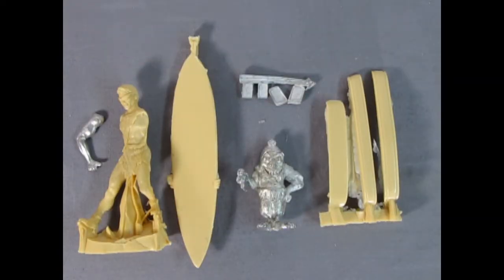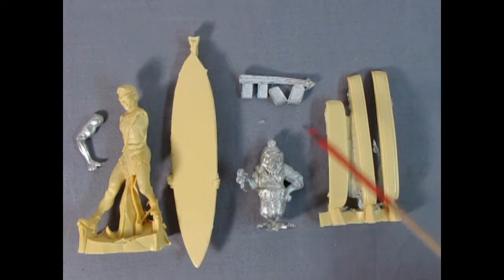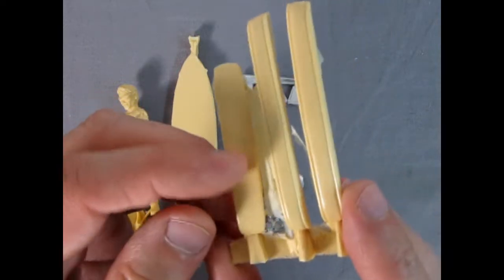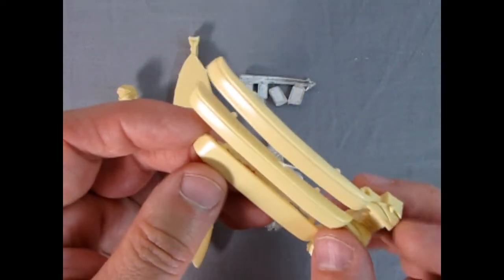Here we have the remaining resin pieces of this kit which includes our figures and the front bumpers. We also have some white metal components that also improve this kit. So for our bumpers and our airfoil you can see that there is a bit of flash in between here but it'll clean up easy.